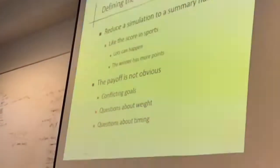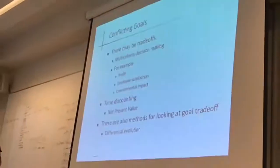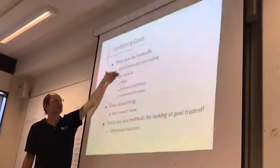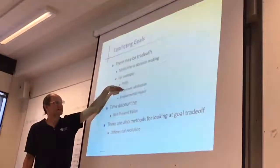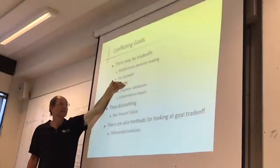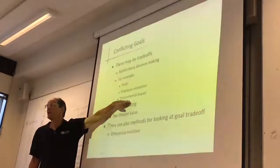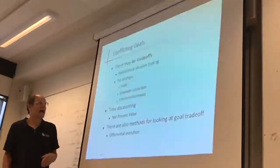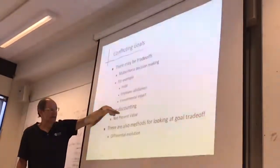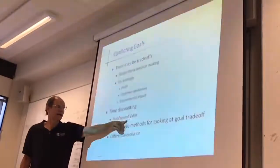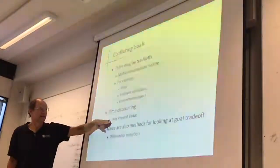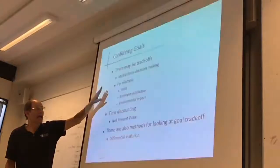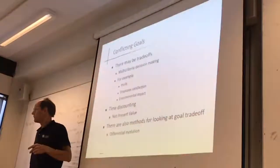Payoff functions are not obvious. We're going to do an example where it's pretty clear, but in many cases there are conflicting goals — questions about weight and timing. Many of you have heard of multi-criterion decision-making. For example, you might have profit, employee satisfaction, and environmental impact — three things you're all worried about. You'd like to maximize profit, keep employees satisfied, and minimize your environmental footprint. Those things may conflict with one another. And then there's time discounting — the standard practice is to use net present value.